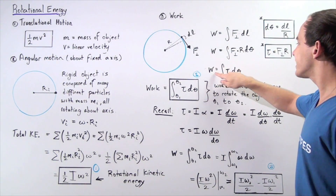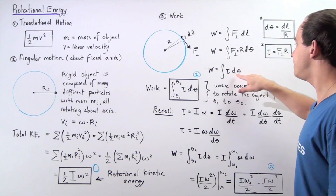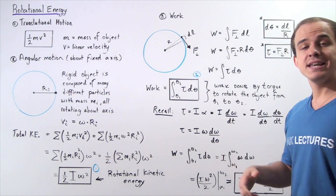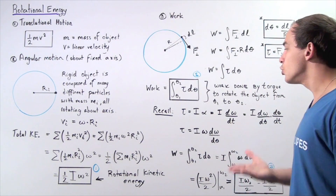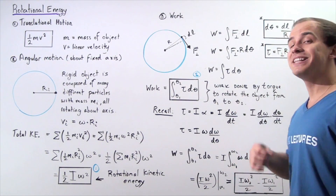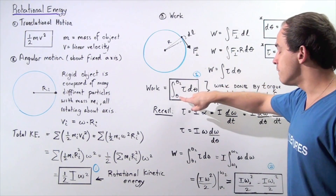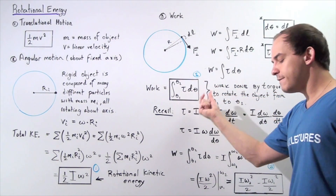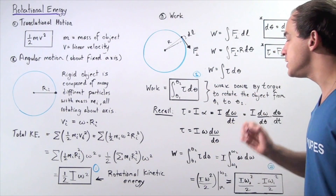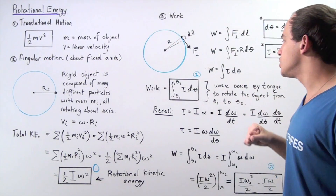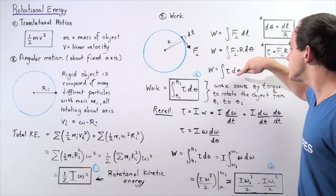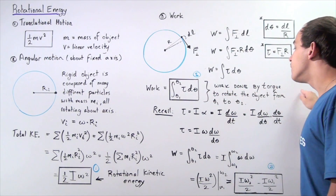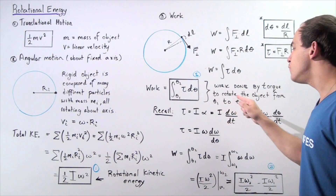So work is equal to the integral of torque d theta. Suppose the initial angle is theta 1 and the final angle is theta 2. We define the definite integral from theta 1 to theta 2 of the torque times d theta, where d theta is the infinitely small change in angular position. This is the work done by the torque to rotate the object from theta 1 to theta 2.